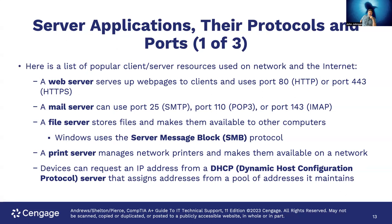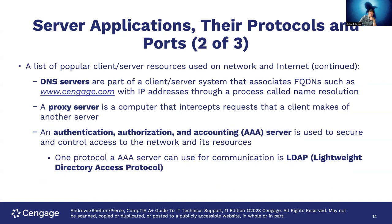File servers store files and make them available to other computers — Windows uses SMB, the Server Message Block protocol. Print servers manage network printers. Devices can request an IP address from a DHCP server that assigns addresses from a pool; it can also hand out reservations so one specific system always gets the same address. DHCP stands for Dynamic Host Configuration Protocol. DNS servers associate fully qualified domain names like www.cengage.com with IP addresses — a process called name resolution. Think of it like the internet's phone book: you look up a name like cnn.com and get the address.